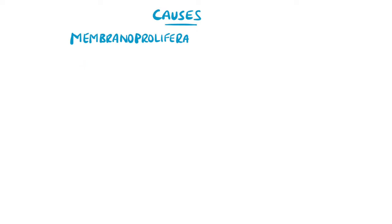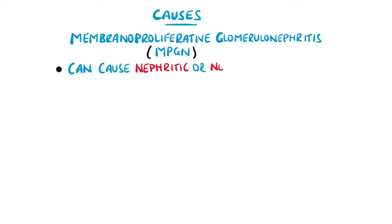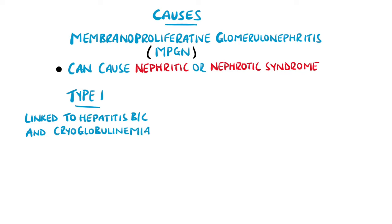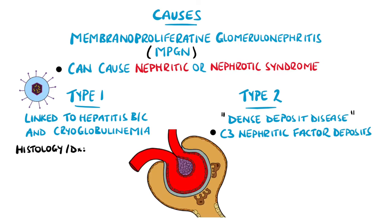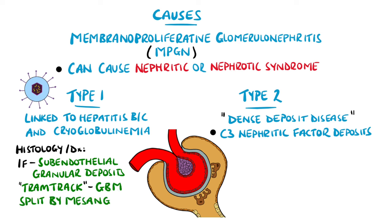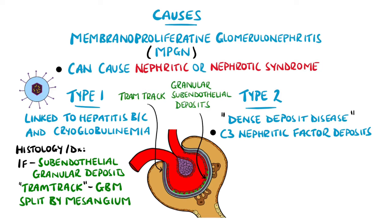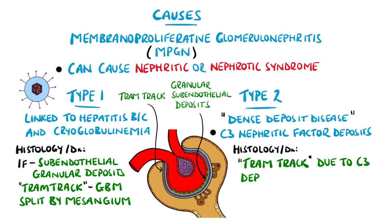Membranoproliferative glomerulonephritis is another pattern seen in both nephritic and nephrotic syndrome, and has two main types. Type 1 is linked to hepatitis B and C as well as cryoglobulinemia, while type 2 is also known as dense deposit disease, featuring deposits of C3 complement within the glomerular basement membrane. In type 1, there are granular subendothelial deposits on immunofluorescence and a tram track appearance of the GBM due to splitting by mesangial proliferation. In type 2, intramembranous deposits of C3 in the GBM also cause splitting, giving the tram track appearance.